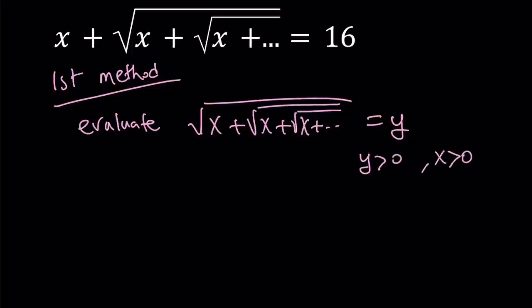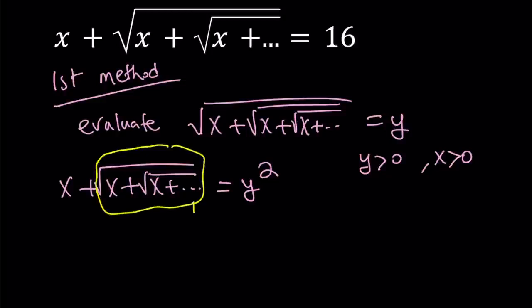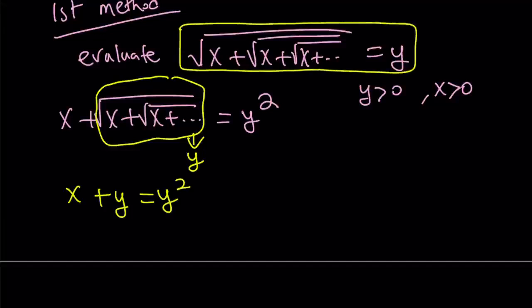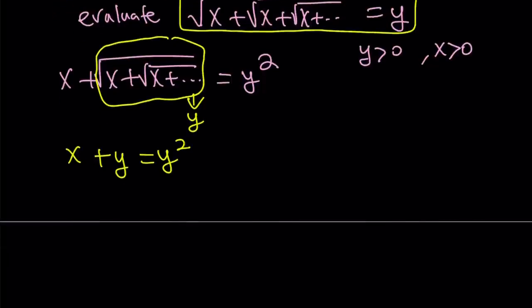Let's go ahead and square both sides here. That's going to give us x plus the square root of x plus the square root of x plus so on and so forth is going to equal y squared. And then notice that part of this expression is the same thing as y, this part, so that we can set it equal to y. This gives us an interesting equation in two variables: x plus y equals y squared. Since our goal is to evaluate this expression right here, we're going to be solving for y.